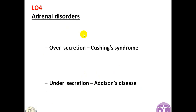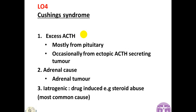In endocrinology, gland disorders are either over-secretion or under-secretion. In the adrenal gland, over-secretion is called Cushing's syndrome and under-secretion is called Addison's disease. In Cushing's syndrome there are three main causes: excess ACTH usually due to a pituitary micro- or macroadenoma; occasionally ectopic ACTH secretion from a tumor outside the pituitary gland, most likely a bronchogenic cancer; or an adrenal tumor secreting glucocorticoids directly.